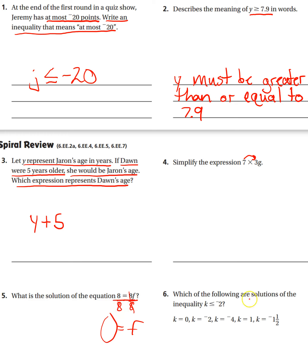Number six: which of the following are solutions for the inequality K < -2? You're just plugging in, so is K = 0 a solution? Is 0 less than negative 2?